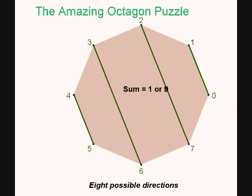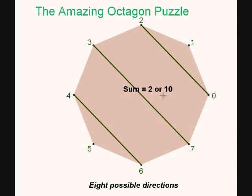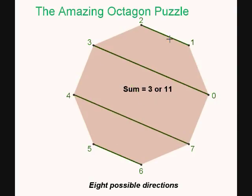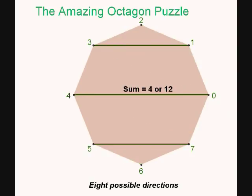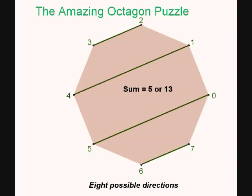So, in this direction, the sums are either 1 or 9. In direction 2, the sums are either 2 or 10. Direction 3, the sum is either 3 or 11, and so on. In direction 4, the sum is either 4 or 12. Notice the higher number is 8 more than the lower number. Direction 5, it's 5 or 13. Direction 6, the sum is 6.